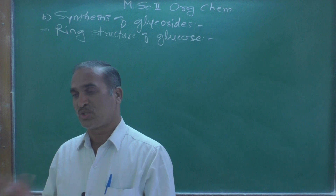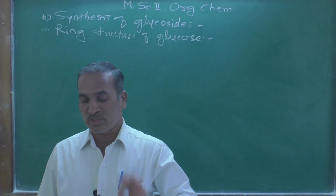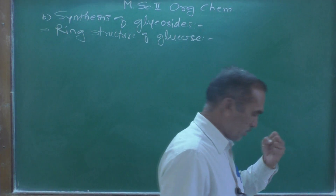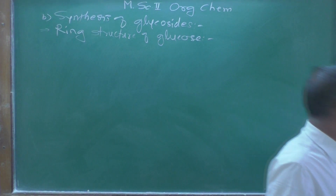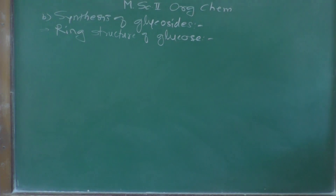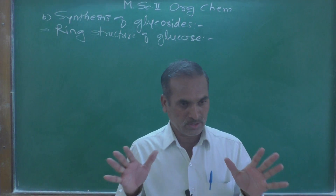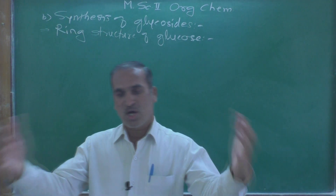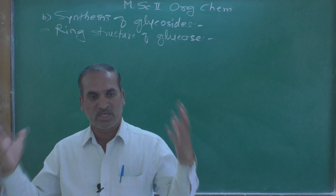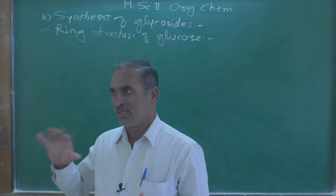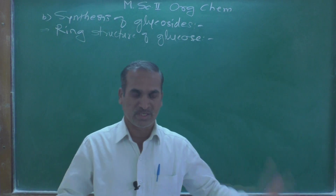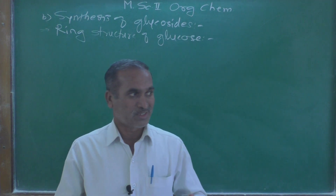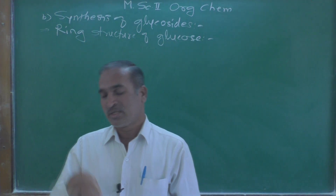The type of monosaccharide units obtained from hydrolysis may be the same or different, depending upon the glycosidic linkage. We will study that later. But first there is a need to study the ring structure of glucose, because we have so far studied the structures of glucose including the Fischer projection formula.